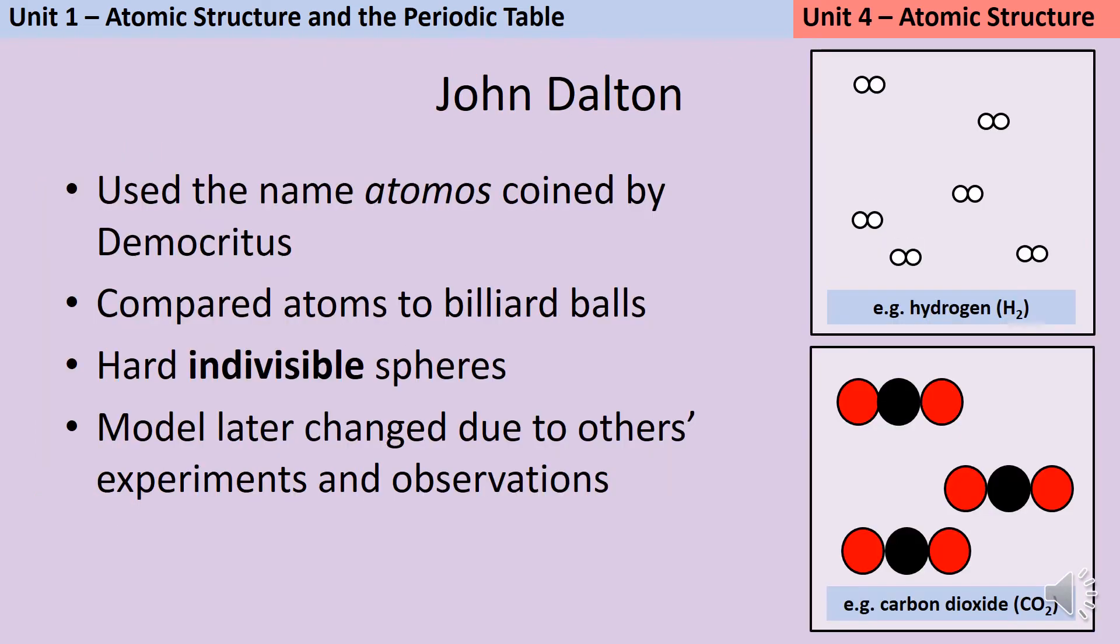Now we're going to look at some of the other models of the atom. We start with John Dalton, who was a British chemist, physicist, and school teacher. When you first started studying chemistry in year seven or eight, his is the model you would have used—just drawing atoms as single circles. His ideas were similar to those of an ancient Greek philosopher called Democritus.